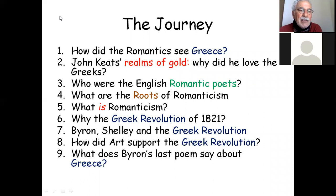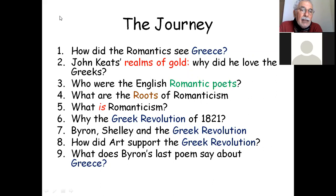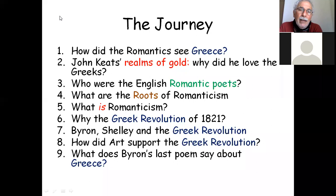This is the plan for today. Keep contributing — don't leave me on my own. I'm going to ask some questions as we go along. How did the Romantics see Greece? We'll start with the poet John Keats, who also marks 200 years since the Greek Revolution and since the death of the great John Keats. He died at the age of 23 or 24 in Rome, and we will ask about his 'realms of gold,' his world of poetry, and why he loved the Greeks. We'll also ask who these Romantic poets were and what the roots of Romanticism are.